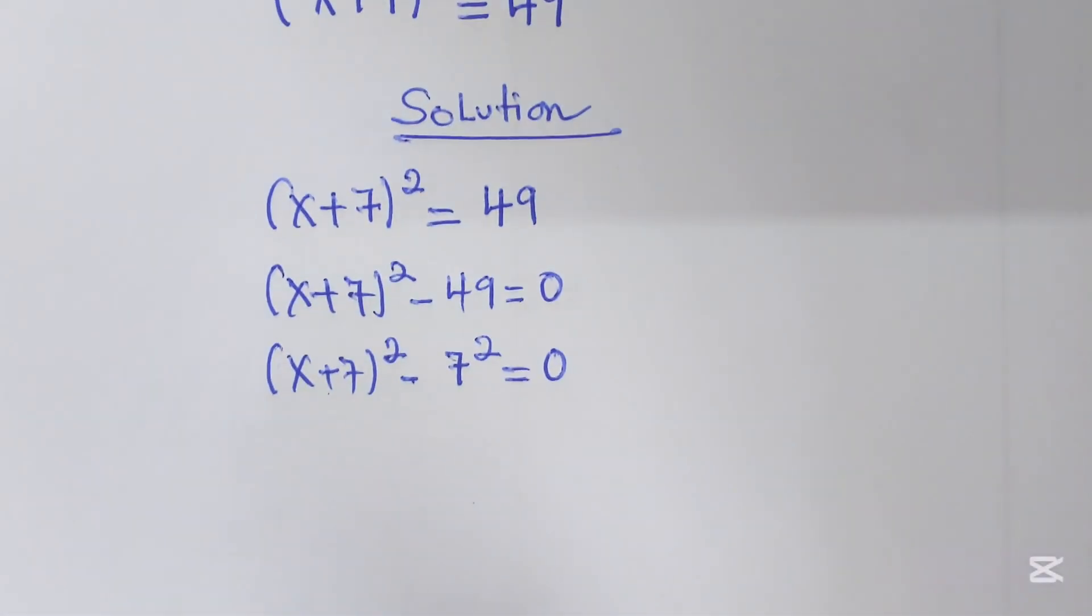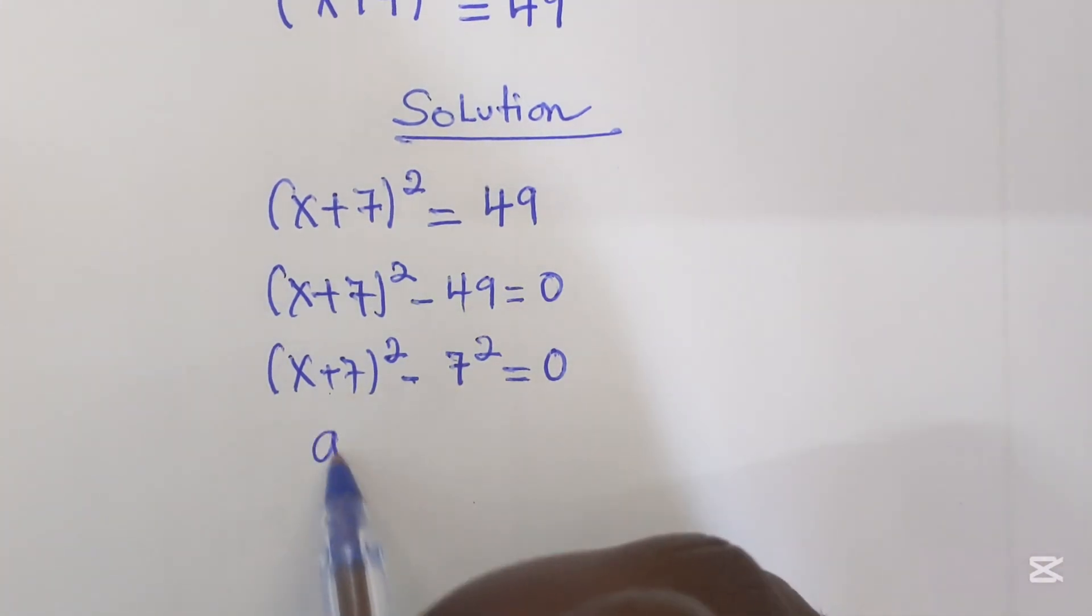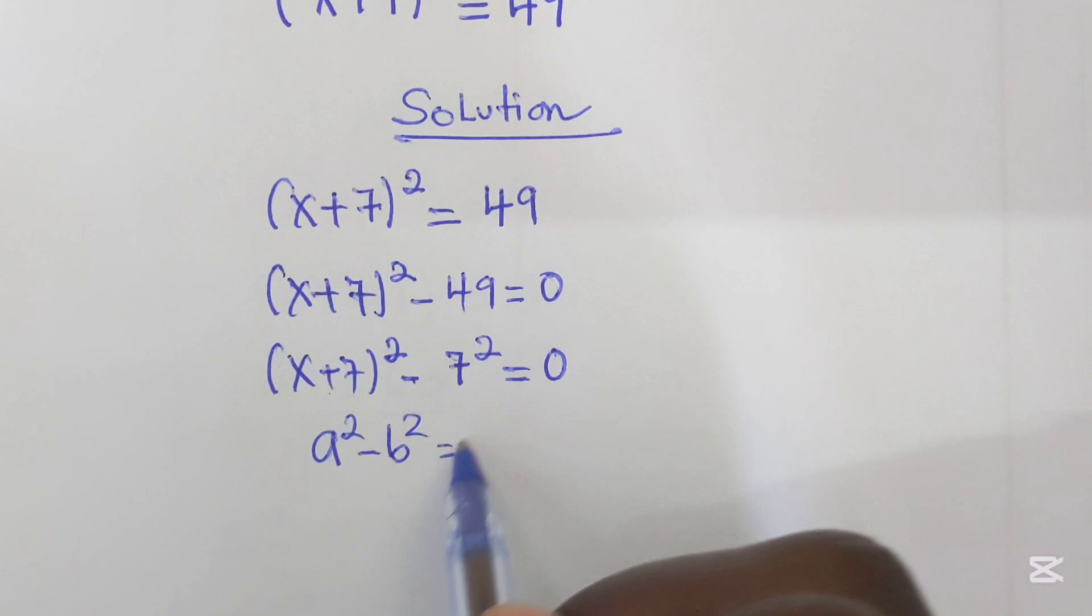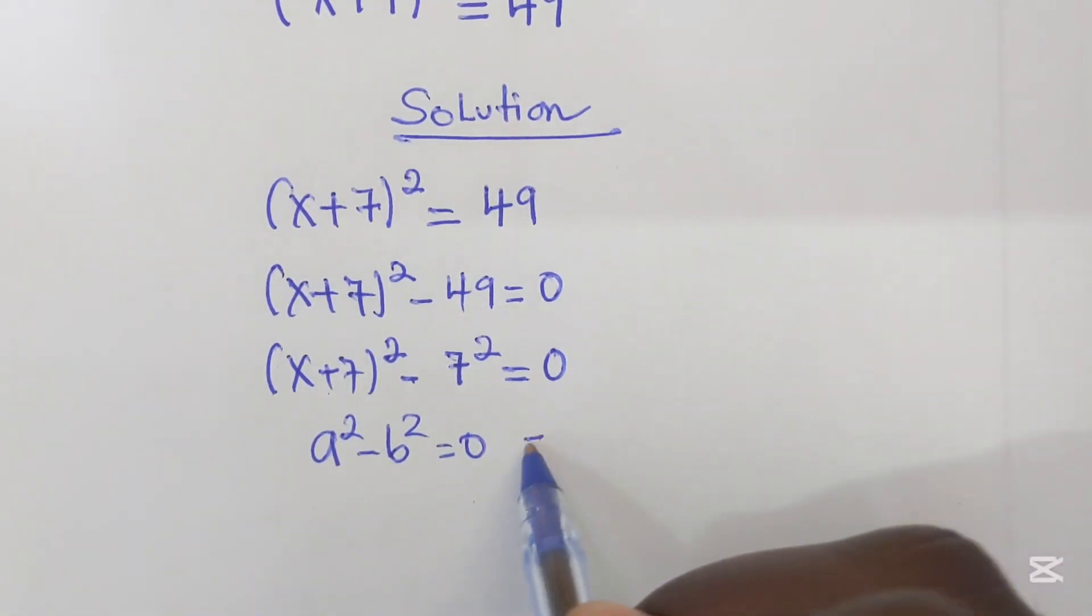Now we have difference of two squares where this can be a² and this can be b². When you have a² - b² = 0, this equals (a-b)(a+b) = 0.